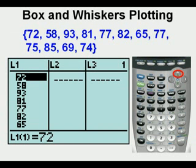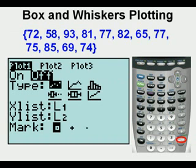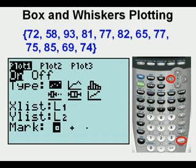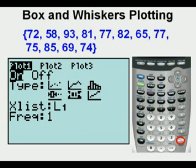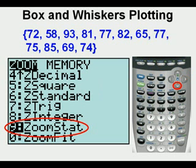With the data entered in L1, we can have the calculator draw the plot for us. We start the plotting process by pressing the second key then pressing the Y equals key, which accesses the STAT plot menu. Press ENTER. If the plot is turned off, arrow once to the left and press ENTER to turn it on. With plot one turned on, arrow down once to adjust the type. Press the right arrow until you come to the box plot view in the center of the bottom row and press ENTER. Now make your plot by pressing ZOOM, scroll down to 9 which is ZOOM STAT, and press ENTER.